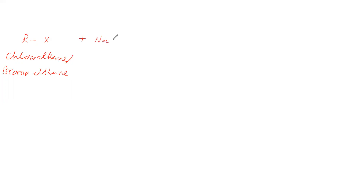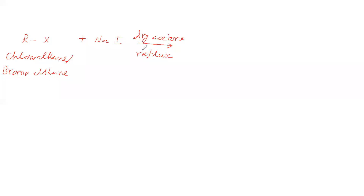To this, Sodium Iodide is added, and the solvent used is dry acetone. It is refluxed. What we get is RI plus NaX — meaning iodine goes to the alkane and X comes out as NaX.